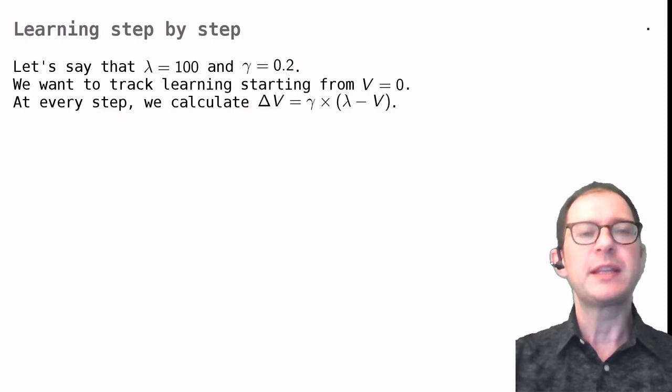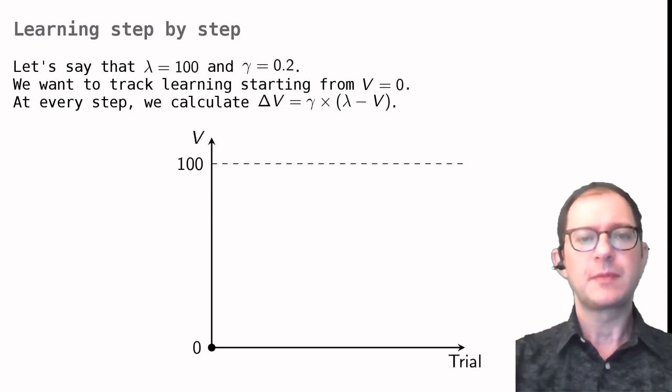At every step, we want to calculate the change in associative strength, gamma times lambda minus V. To help us, we track things on this graph.